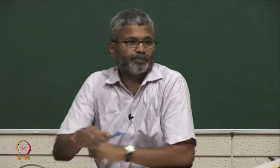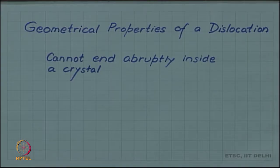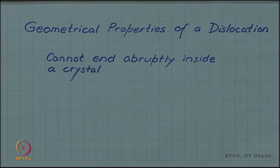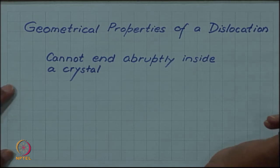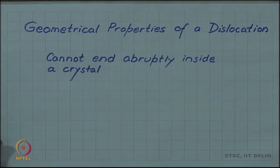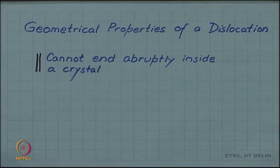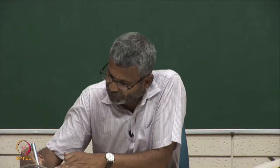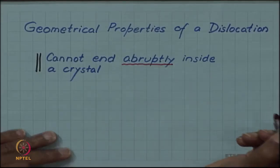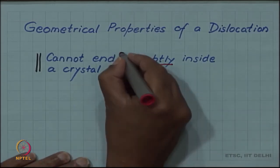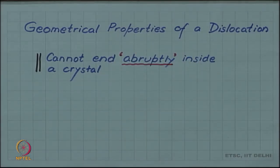We have discussed some geometrical properties like the Burgers vector of a dislocation line in the last video. We will continue with other geometrical properties, and one of the important ones is that a dislocation cannot end abruptly inside a crystal. This is a very important property and we will spend some time on this — it will become clear what exactly is meant by the phrase 'abruptly.'